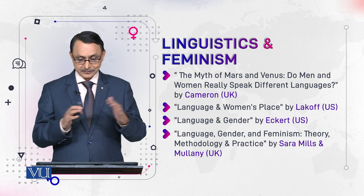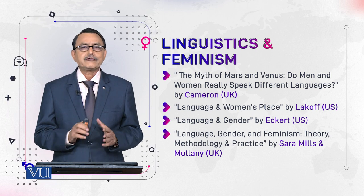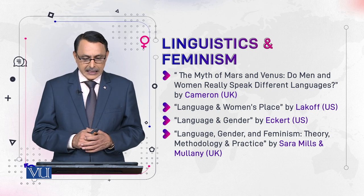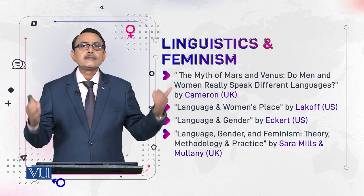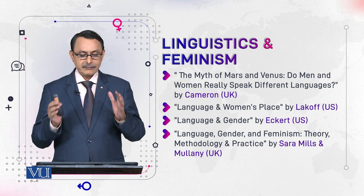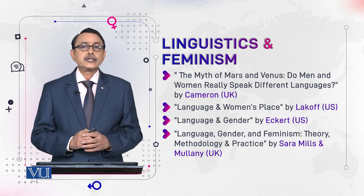Another pair of British scholars in this field are Sarah Mills and Melanie. Their work, Language, Gender and Feminism: Theory, Methodology and Practice, is very important from many angles. Most prominently, readers of this book learn about the major concepts, theories, and perspectives on the relationship between language, gender, and feminism, as well as its history. It is also an important source for students who want to research issues in the field of language and gender.